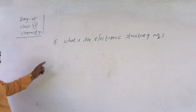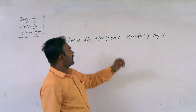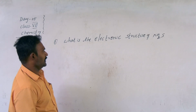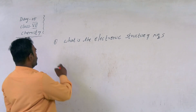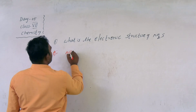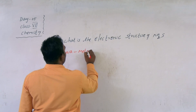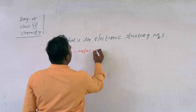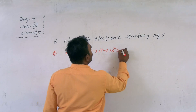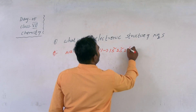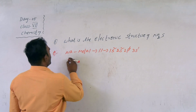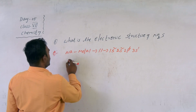The next question is: what is the electron structure of Na₂S? Here sodium is a metal. Its atomic number gives the configuration 1s2, 2s2, 2p6, 3s1.